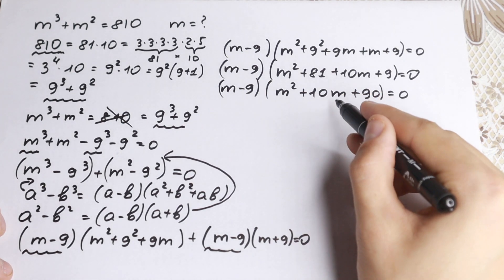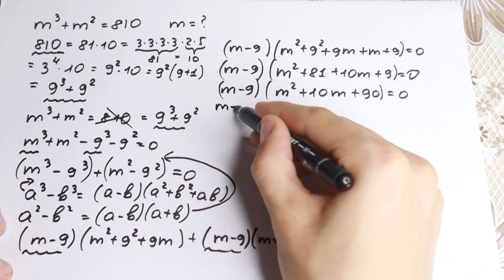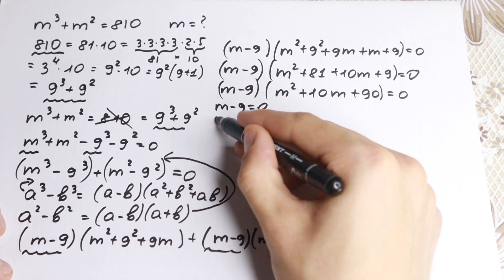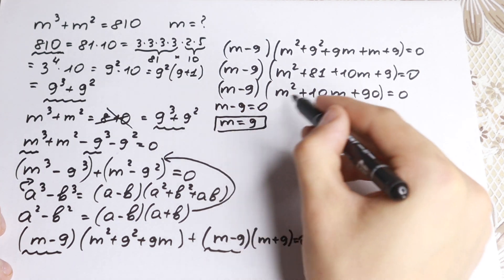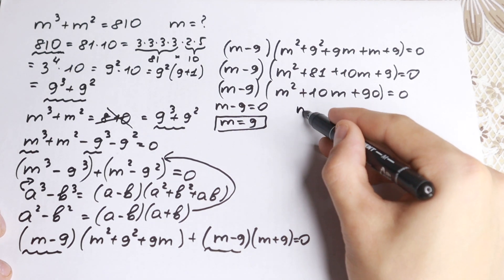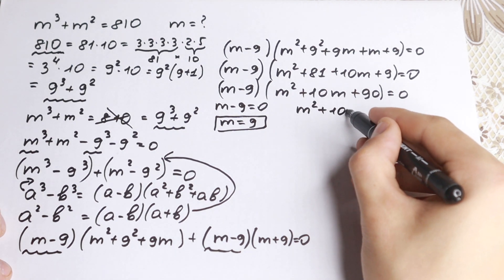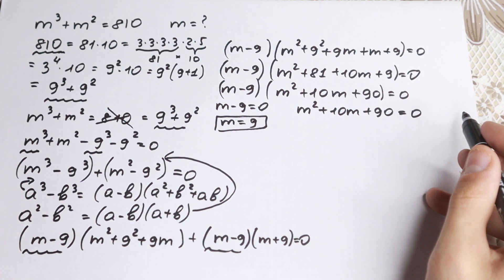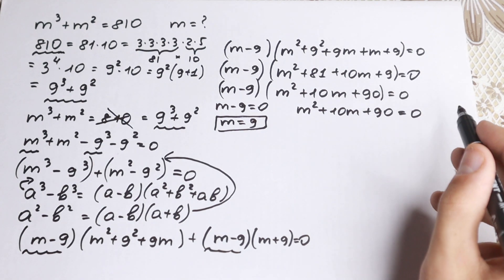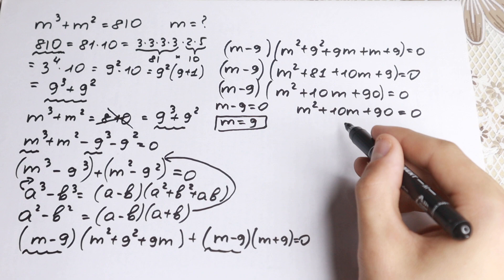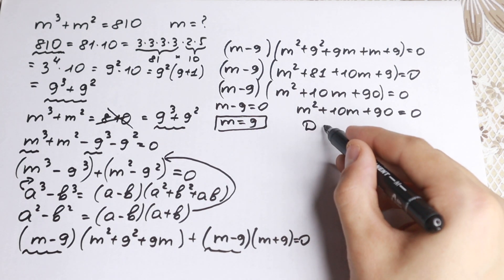Since we have a product equal to zero, either m − 9 = 0, giving m = 9 as our first root, or m² + 10m + 90 = 0. Let's solve this quadratic equation using the discriminant.